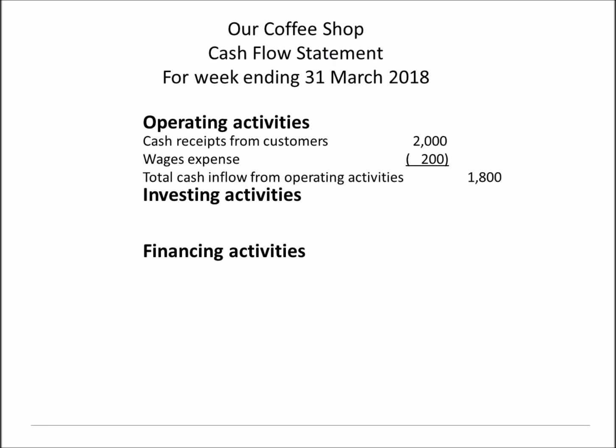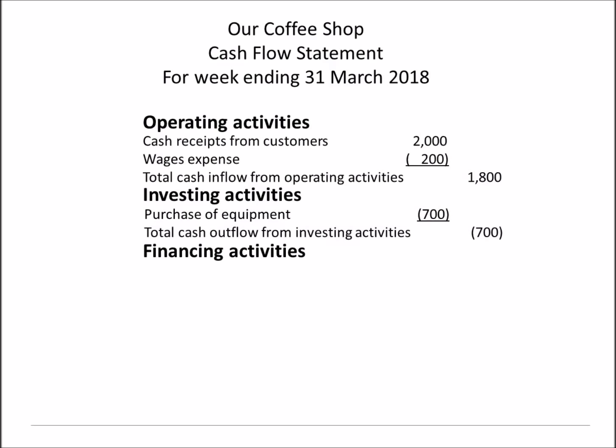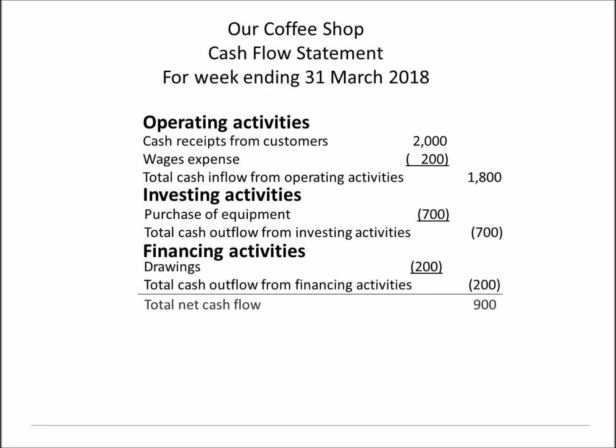Investing activities relate to investments in property, plant and equipment. Let's say we purchased a refrigerator for $700 and paid cash for it — so we have a cash outflow of $700 in this section. Financing activities relate to anything to do with financing the business, such as capital contributions and drawings, or for a company, issuing shares and dividends. In our case, we had a cash outflow of $200 because we withdrew this for ourselves. By adding together the separate cash flows, we get a net cash inflow for the week of $900. Adding this to our beginning cash of $500, we can calculate we must have $1,400 cash at the end of the period.